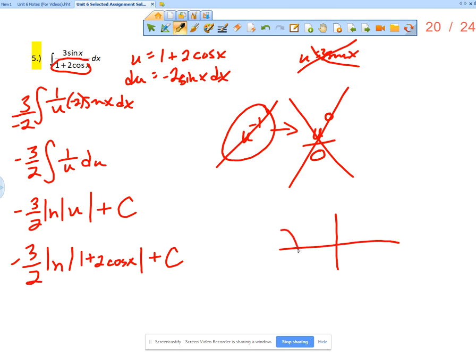Remember, cosine x is a function that looks like this. The 2 makes it go from positive 2 down to negative 2. And the 1 plus is going to shift it up. So that means it's going to go from negative 1 up to 3, which means it is not strictly positive because it still has a negative portion. So you still need the absolute value.